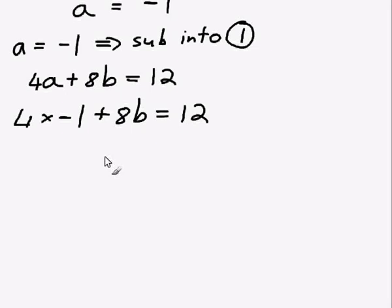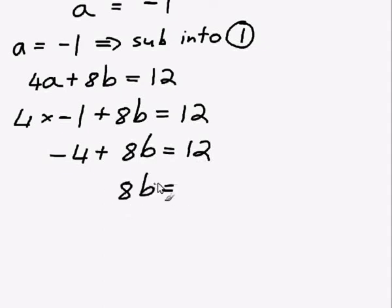So now I just have to solve this equation for b. There's only one variable in it. So it becomes negative 4 plus 8b equals 12. And then I have 8b equals, if I put the negative 4 on the other side and make it a positive, I get 8b equals 16, so b equals 2. So I've found my second variable.